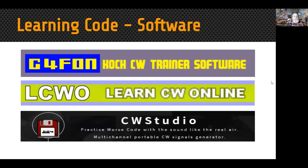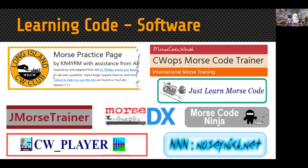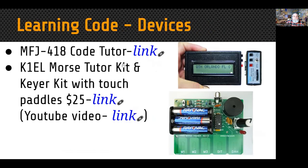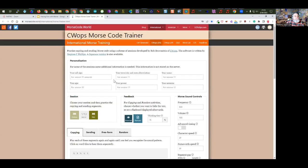There's some software out there: G4FON, LCWO, CW Studios, and videos. The Long Island CW Club uses the Morse Practice Page, which is very similar to the CW Ops Morse Code Trainer. Both are web-based training tools — you can go on the web and use them without installing anything on your computer, and they let you set all the parameters you need for learning CW. There's also Jay Morris CW Player, Morris DX, Ninja, and Just Learn Morse Code — all online software you can use to learn the code.